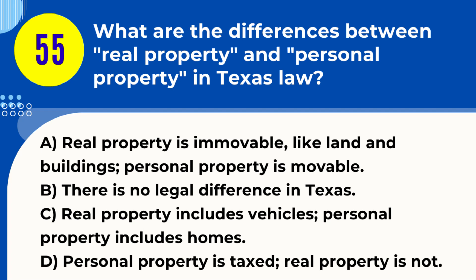Question 55. What are the differences between real property and personal property in Texas law? A. Real property is immovable, like land and buildings; personal property is movable. B. There is no legal difference in Texas. C. Real property includes vehicles; personal property includes homes. D. Personal property is taxed; real property is not. Answer: A. Real property is immovable, like land and buildings; personal property is movable. Explanation: In Texas law, real property refers to immovable property such as land and buildings, while personal property includes movable items like furniture and vehicles.